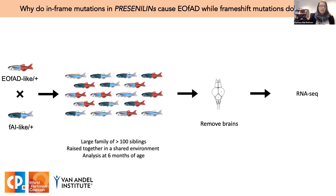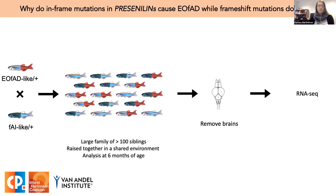I crossed fish heterozygous for either of these mutations together to create a large family of sibling fish raised together in a single tank. This reduces genetic and environmental noise, allowing us to detect subtle differences due to the mutations — one of the huge benefits of using zebrafish for these experiments. We performed RNA-seq in the brains of our fish at six months of age, when zebrafish are recently sexually mature. This age is roughly equivalent to early adulthood in humans, modeling the very early pre-symptomatic disease stages.